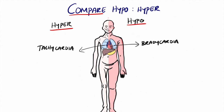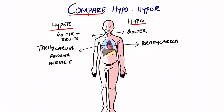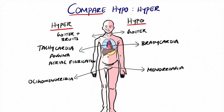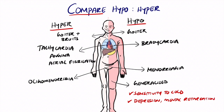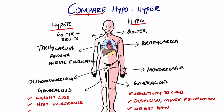Comparing hypothyroidism and hyperthyroidism: in hypothyroidism there is bradycardia, whereas in hyperthyroidism there is tachycardia. Hyperthyroidism may present with goiter with a bruit. Hypothyroidism is associated with menorrhagia, sensitivity to cold, depression, mental slowing, and most commonly weight gain. Hyperthyroidism conversely presents with weight loss even when increasing calorie intake, heat intolerance, anxiety, and nervousness.